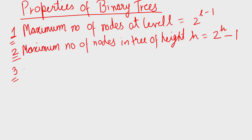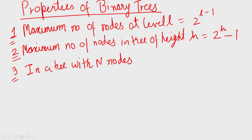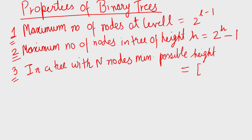In a binary tree with n nodes, the minimum possible height — or minimum number of levels — is the greatest integer of log base 2 of (n plus 1). We have already discussed this property. Now let us move towards another property of binary trees.